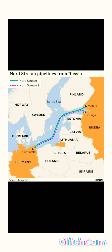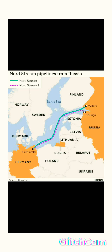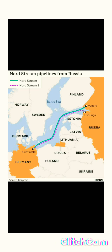Through this pipeline, once it is done, it can carry 55 billion cubic meters of gas per year. This pipeline was decided to be built in 2015. You might already know that Nord Stream 1 is already completed, and now together with this one, it will supply 110 billion cubic meters of gas per year to Germany.